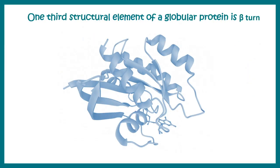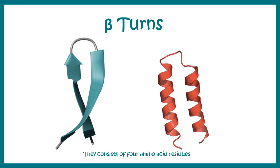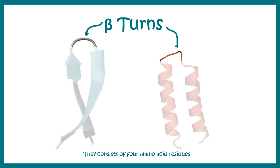In fact one third of the structural elements of a globular protein is actually beta turn. So beta turn is not an uncommon structure in terms of a protein. Now let me tell you that these beta turns could be a part of super secondary structure or super secondary motif such as shown here. They consist of generally four amino acid residues so they are very simple in terms of structure.